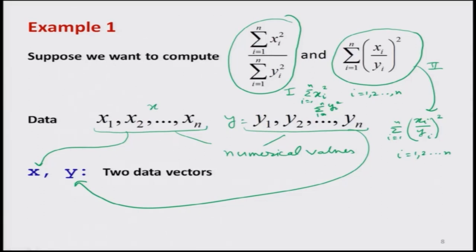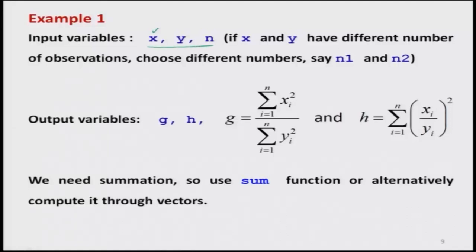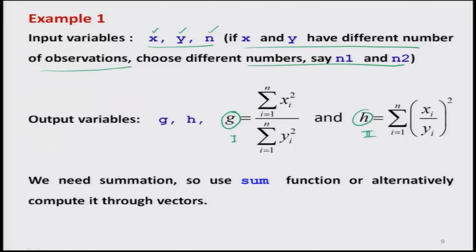We identify the input and output variables. There are three input variables: x (data x1 to xn), y (data y1 to yn), and n (the number of observations). If x and y have different numbers of observations, we can use n1 and n2, but here they are the same. For output, we define g for the first function and h for the second function — so we have two output variables g and h.